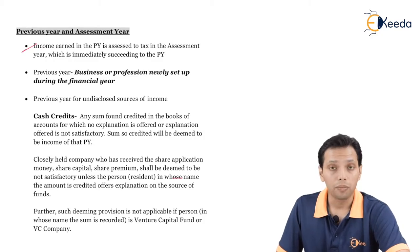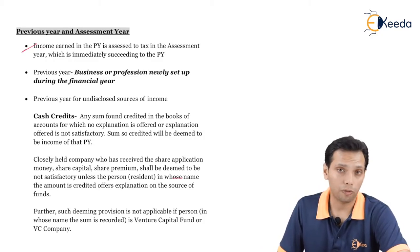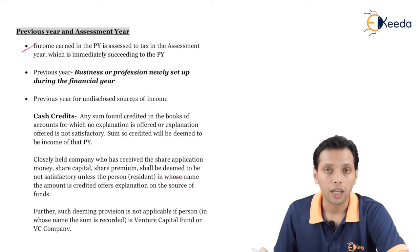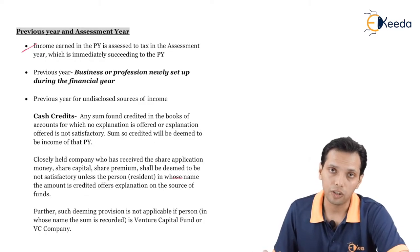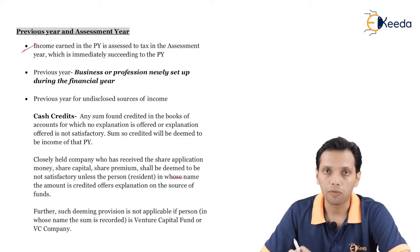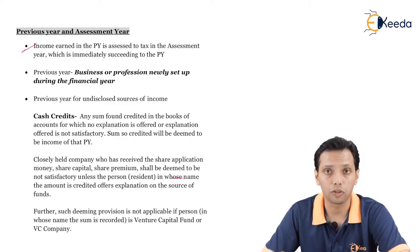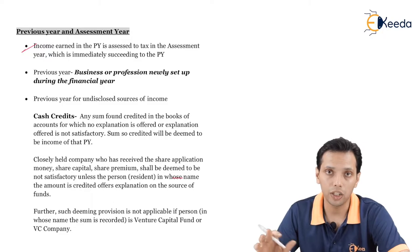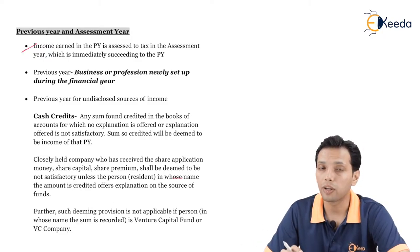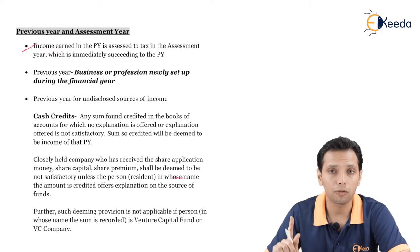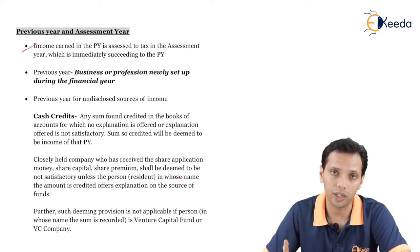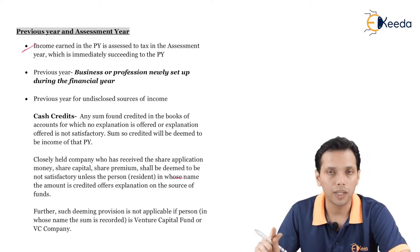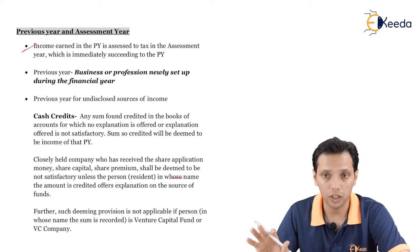For a Business or Profession which is newly set up, the previous year would start from the date on which the business or profession starts — for example, 1st of July 2019 — and it will go on to 31st March 2020. Vis-a-vis, for a continuing business, it would start on 1st of April 2019 and go on to 31st March 2020.